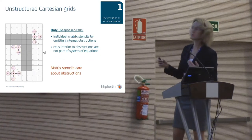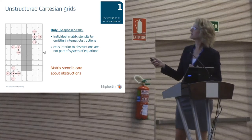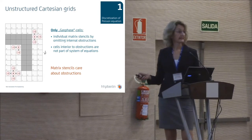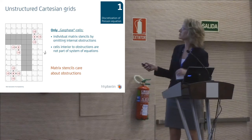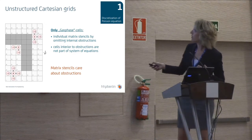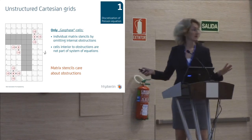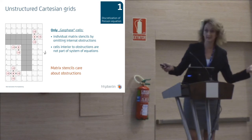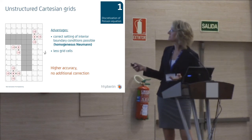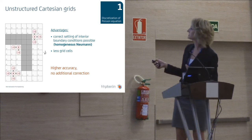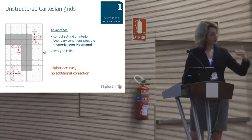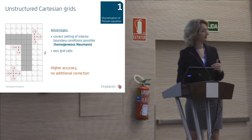So is there a better way? We could think of an unstructured Cartesian grid — this was mentioned yesterday in the talk of Marcos. Now the matrix stencils really care about the obstructions, and we have individual matrix stencils depending on the position in the domain. All the cells interior to those obstructions are no longer part of the system of equations, and besides, we have fewer grid cells. The advantage is clear: now we are able to make a correct setting of the boundary conditions. We have to use a homogeneous Neumann condition,